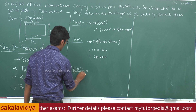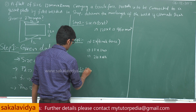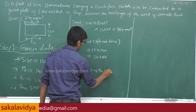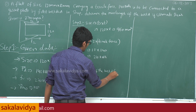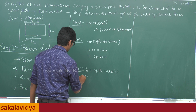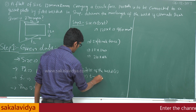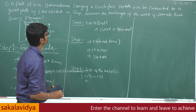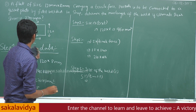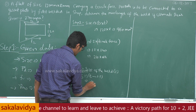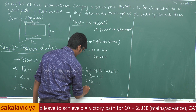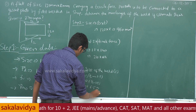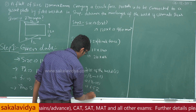Step 3: Finding the size of the weld. We can directly take S equal to thickness of the plate minus 1.5. The thickness of the plate is 8 mm, so 8 minus 1.5 gives us 6.5 mm. For calculation purposes, we take the weld size as 6.5 mm.